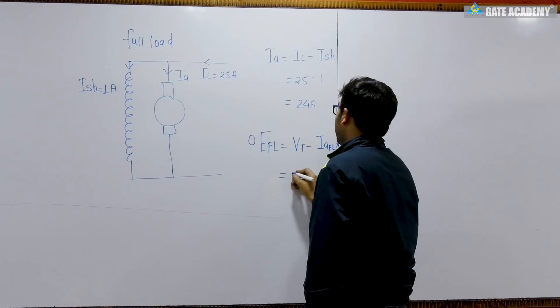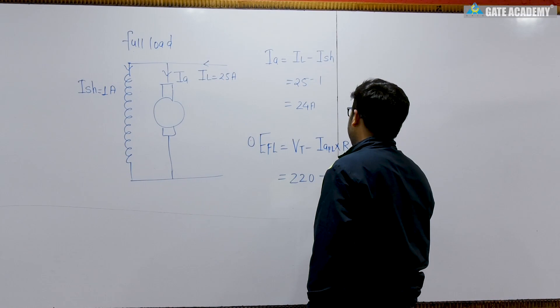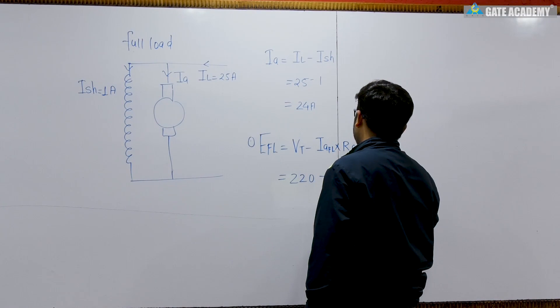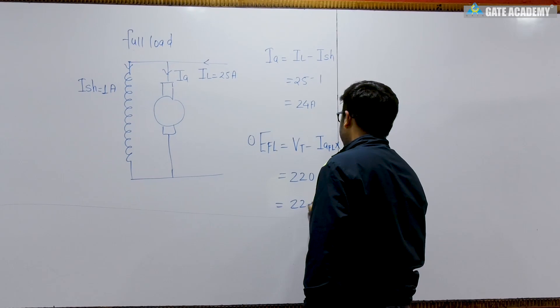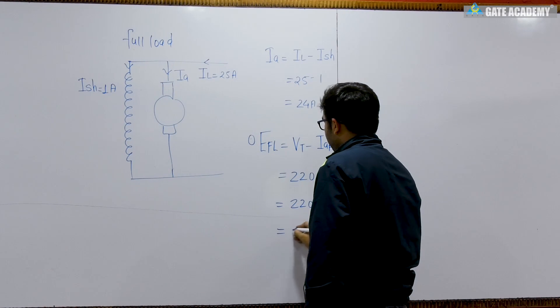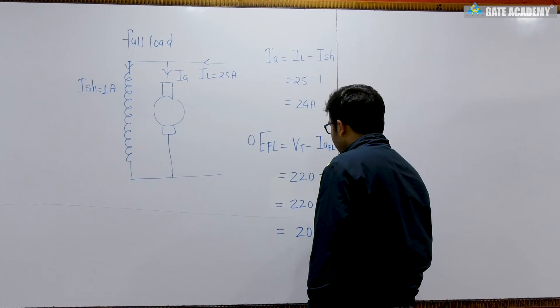So this will be equal to 220 minus 24 into 0.5, so we are getting 220 minus 12, that is 208 volt.